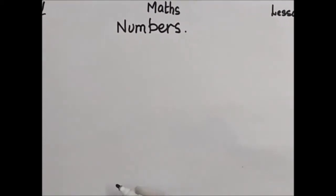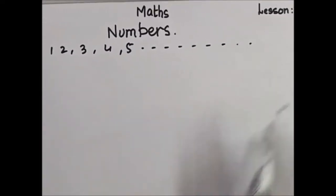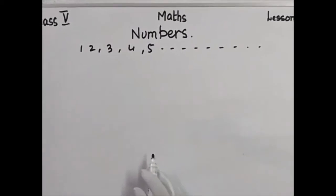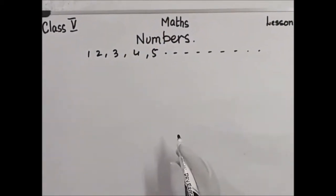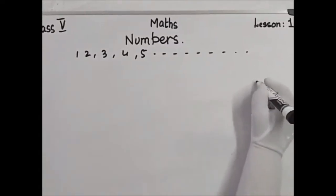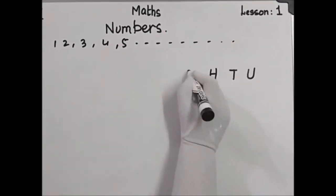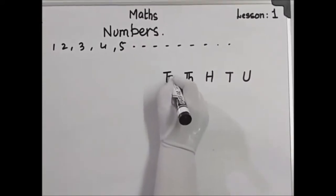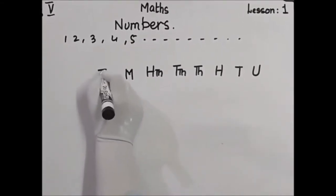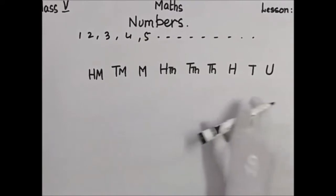All of you know that the numbers are one, two, three, four, five and so on. We already know about the nine-digit numbers. In the place value chart, the nine-digit number goes up to hundred million. First, we make the place value chart: unit, ten, hundred, thousand, ten thousand, hundred thousand, million, ten million, hundred million.